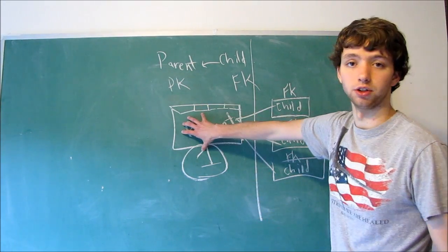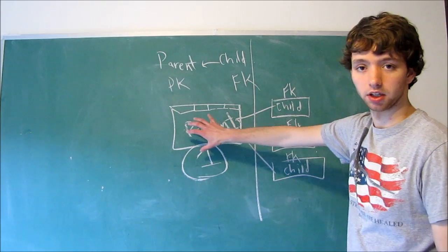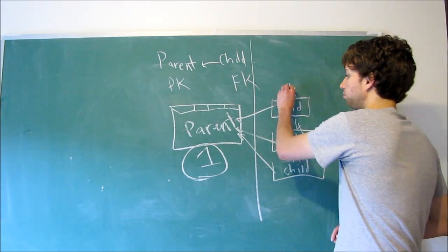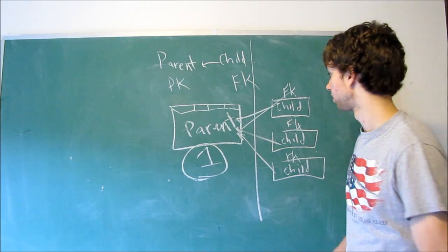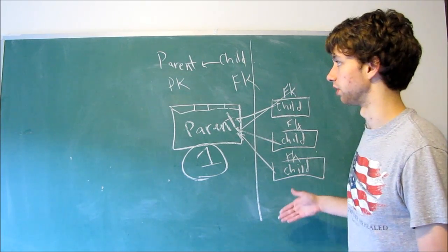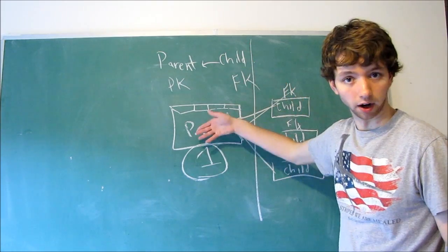User ID, primary key. User ID, foreign key. Foreign keys always go in the children. Primary keys go in the parent.